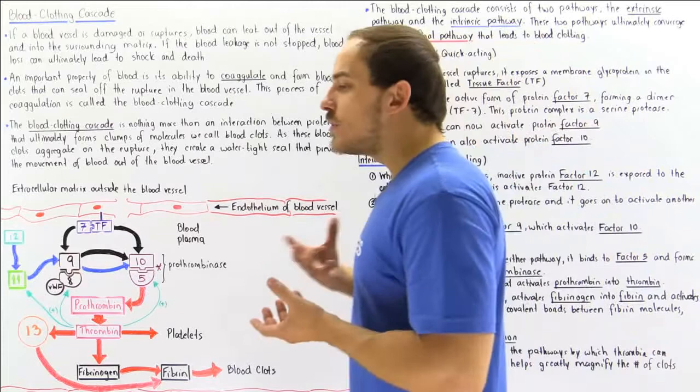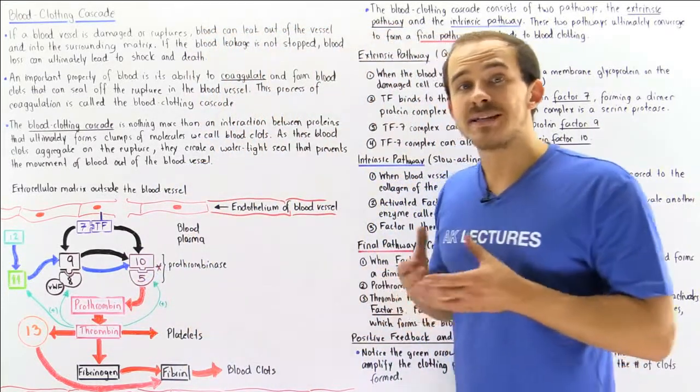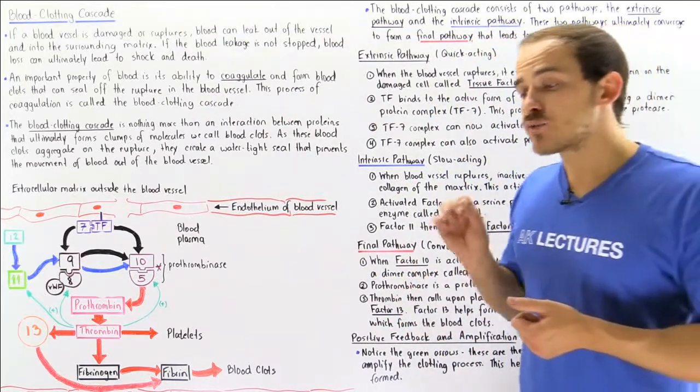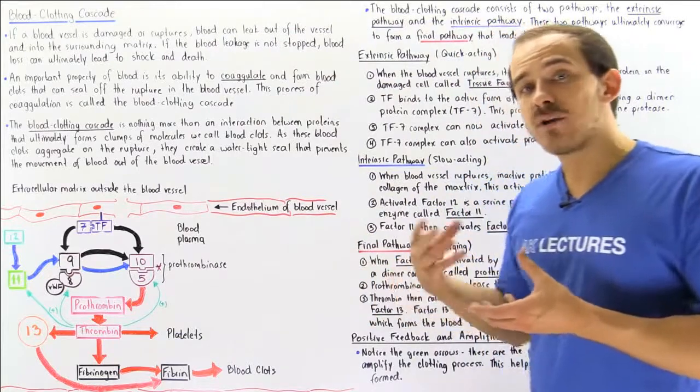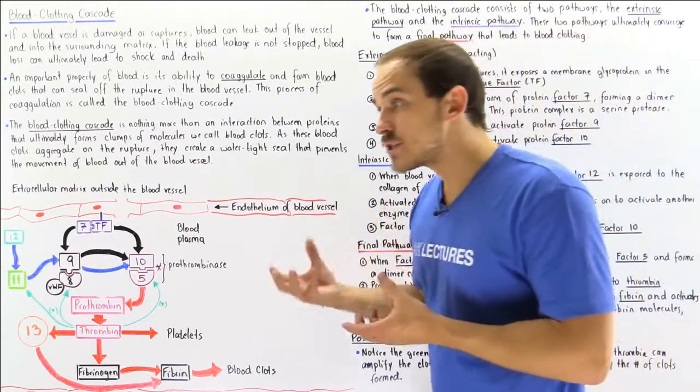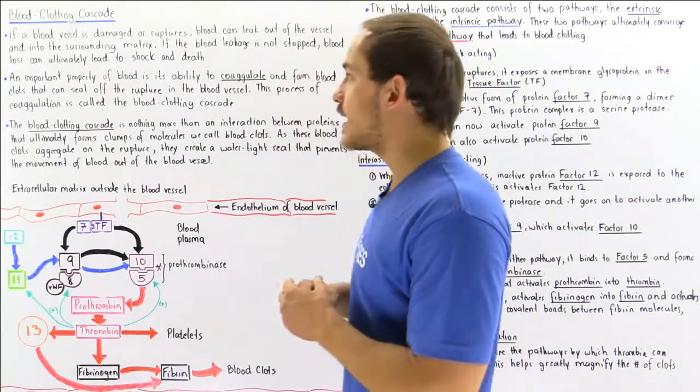Because our blood vessels rupture constantly in our body, our body has a way to actually repair these ruptures in our blood vessel. And the process by which our body repairs these ruptures is known as the blood clotting cascade.